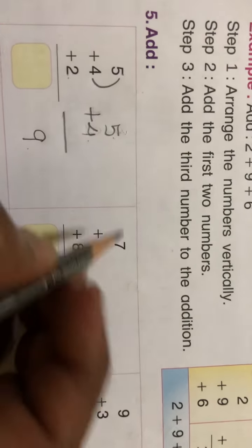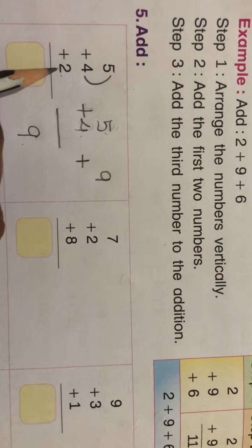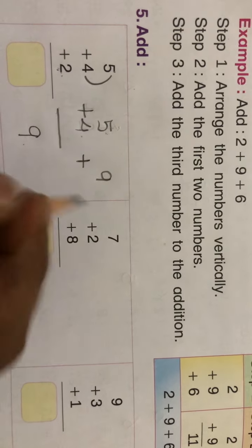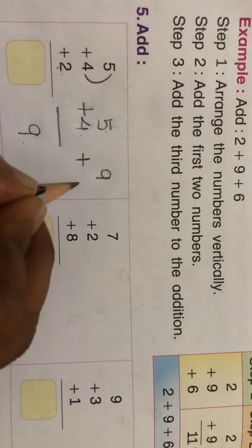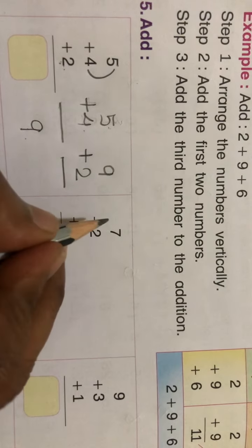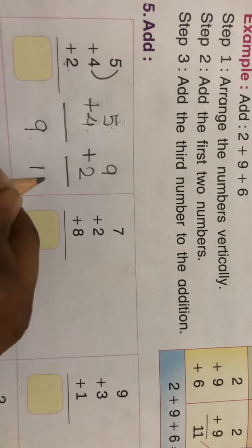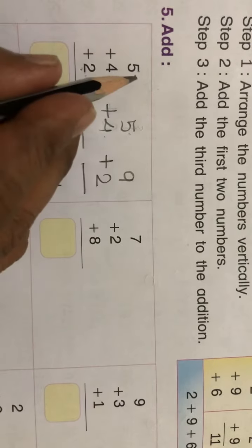Plus you have to add the third addend, the last one, the third addend you have to add to this sum. So 9 plus 2. After 9, two numbers ahead: 10 and 11. So your answer will be 11. After that you will write here.